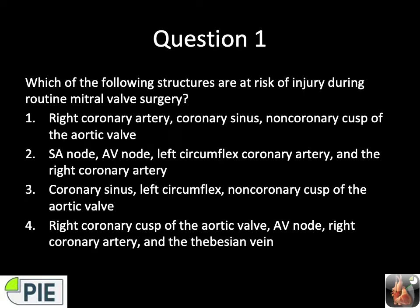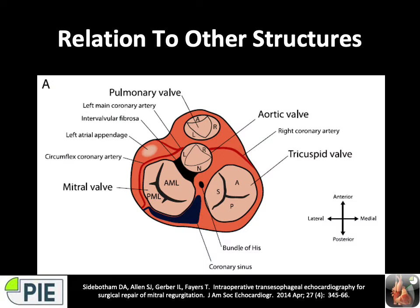To answer this you really need to know about the mitral valve's relation to other structures. The mitral valve is situated posterior and lateral to the aortic valve. It's to the left of the tricuspid valve, anterior to the coronary sinus, and posterior to the left circumflex artery. The posterior portion is in close proximity to the bundle of His. Clinical implications include complications such as tear of the coronary sinus, aortic valve injury, tricuspid valve problems, conduction system abnormalities, and circumflex artery injury.